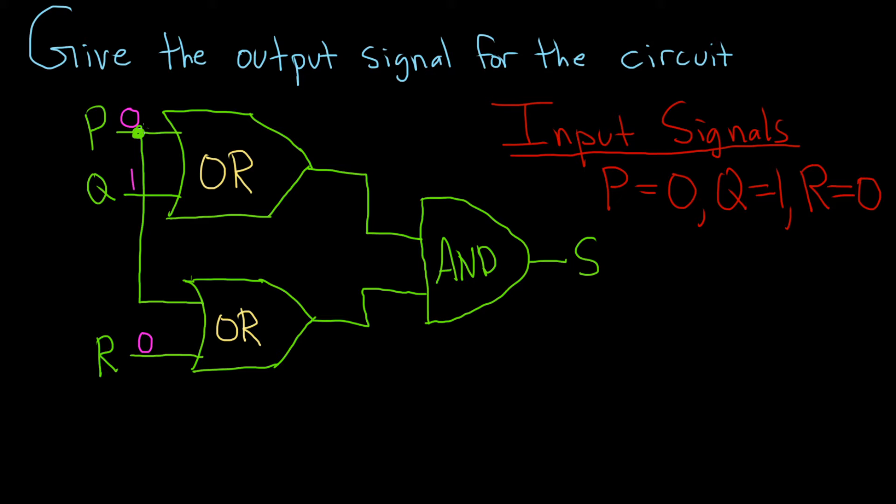So as the 0 and the 1 pass through the OR gate, OR is going to be 1 as long as one of these is 1. So this one is 1, so we're going to get a 1. The only time the OR gate will produce a 0 is if they're both 0s.